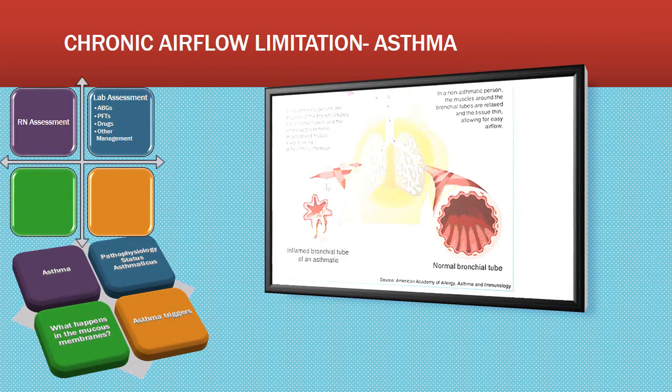Here is a graphic of an inflamed bronchial tube of an asthmatic versus a normal bronchial. Allergens in asthma bind to a specific antibody molecule, IgE, located in mast cells and basophils. These cells are filled with chemicals — histamine, leukotrienes, and interleukin-4s — and the release of these chemicals triggers a white blood cell response and an inflammatory response.